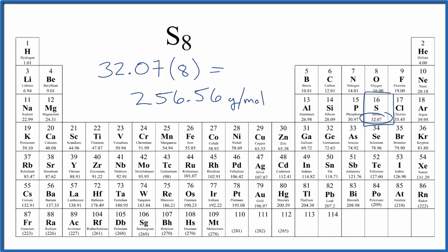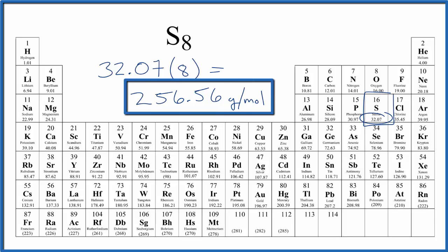What this number means is if I have 256.56 grams of S8 octa-sulfur, that's going to be one mole of octa-sulfur. If I had one mole, I'd know that the mass for octa-sulfur would be 256.56 grams.